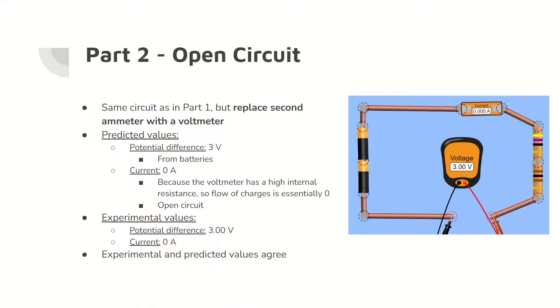In part two, the same simple circuit is used, but one ammeter is replaced with a voltmeter. The result is a measured potential difference of three volts from the batteries and a current of zero amperes. This is due to the high internal resistance of the voltmeter, which essentially opens the circuit and impedes the flow of current.